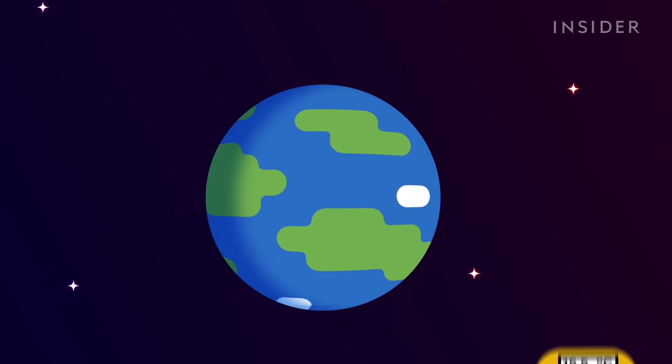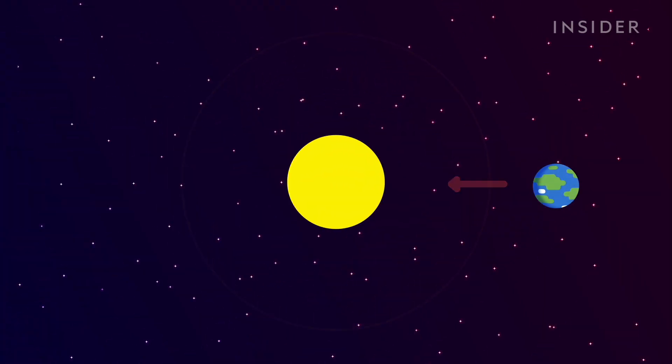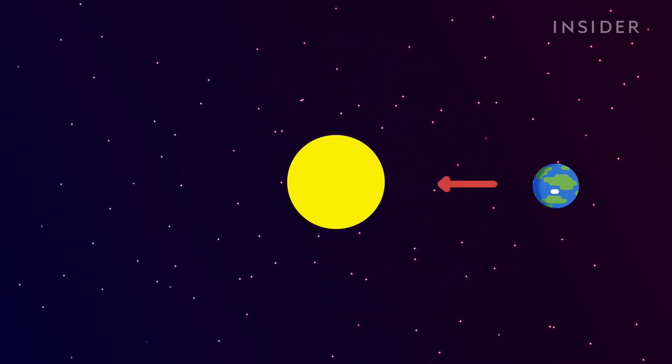That's because the planet is about to get very, very hot. You see, the sun's tremendous gravity pulls the Earth right toward it. Meanwhile, the planet is trying to whiz away in this direction. This tug of war keeps us in orbit.